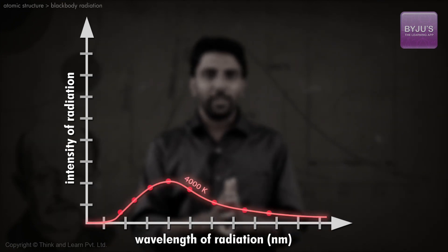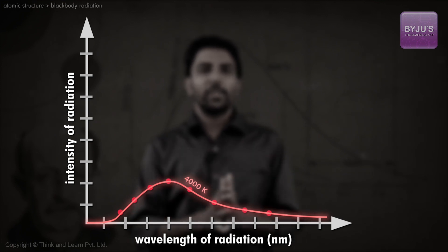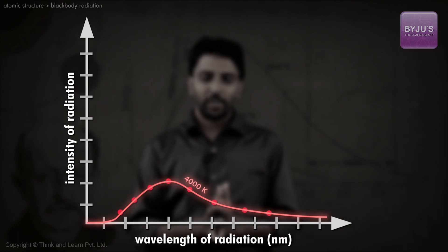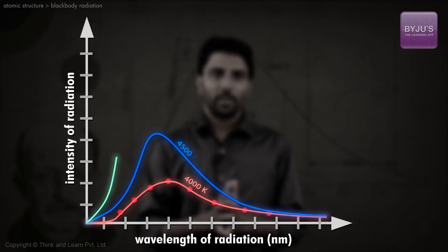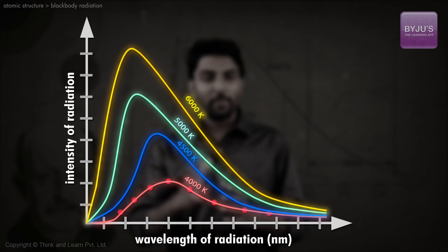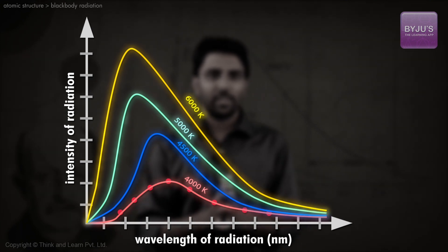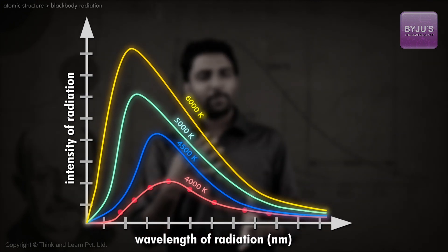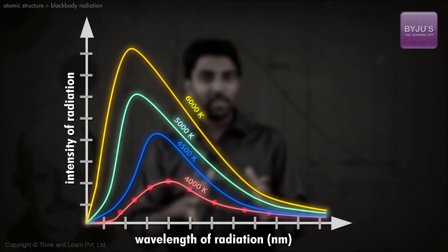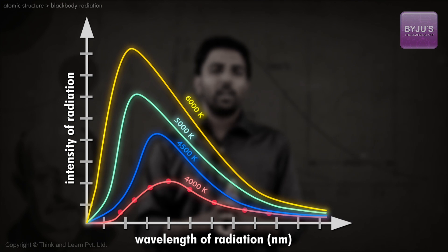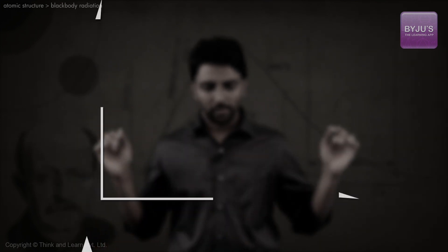By changing the electrical parameters, we can alter the temperature of the incandescent emitter, and in this manner we get these graphs. If we measured the intensity of black body radiation versus the wavelength emitted at different temperatures, we would obtain a series of curves similar to the ones shown here. The experimental evidence — the measurements — were not in agreement with the classical theory.